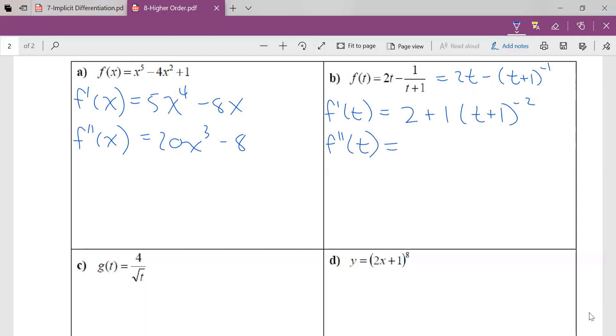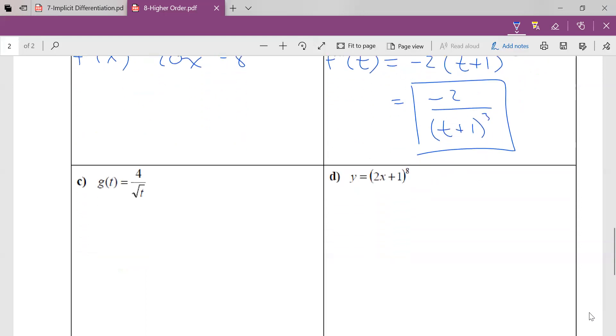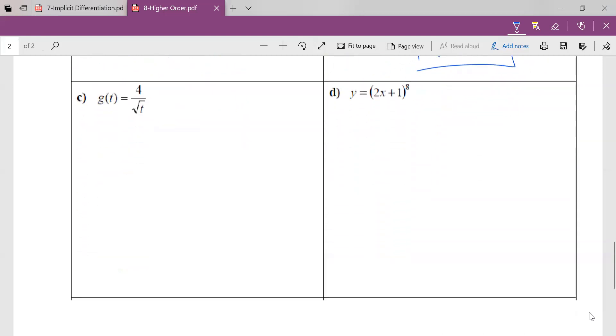Well, the derivative of 2 is 0. Derivative of 1 times t plus 1 to the negative 2, so 1 times negative 2 is negative 2t plus 1 to the negative 3. And let's write that, of course, with a positive exponent. Okay, so not too bad, right? Like you're seeing, okay, you're like, yeah, okay, it's the same rule. I'm just repeating it, right? There's not too much to it.